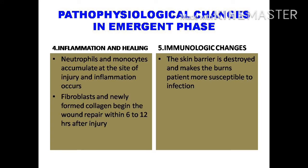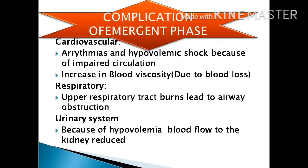Signs and symptoms are based on the depth and extent of the burn. Complications of the emergent phase include hypovolemic shock and arrhythmias due to blood loss. Blood viscosity increases because the solvent is lost but solutes remain. Upper respiratory tract burns can lead to airway obstruction from edema. In the urinary system, hypovolemia causes decreased blood flow to the kidney, resulting in renal ischemia.